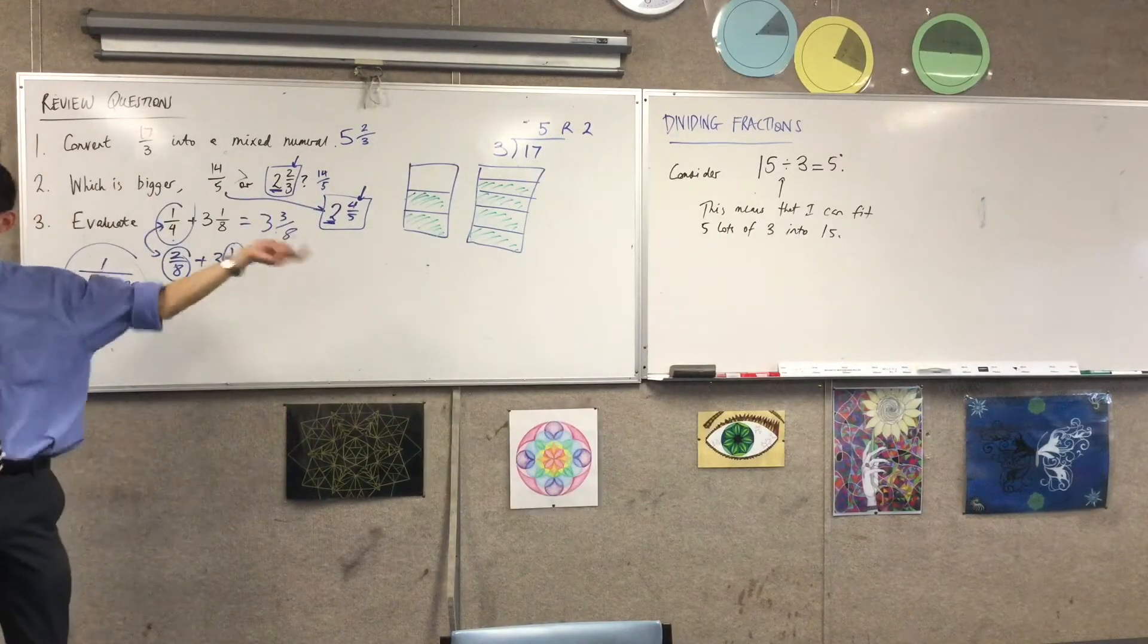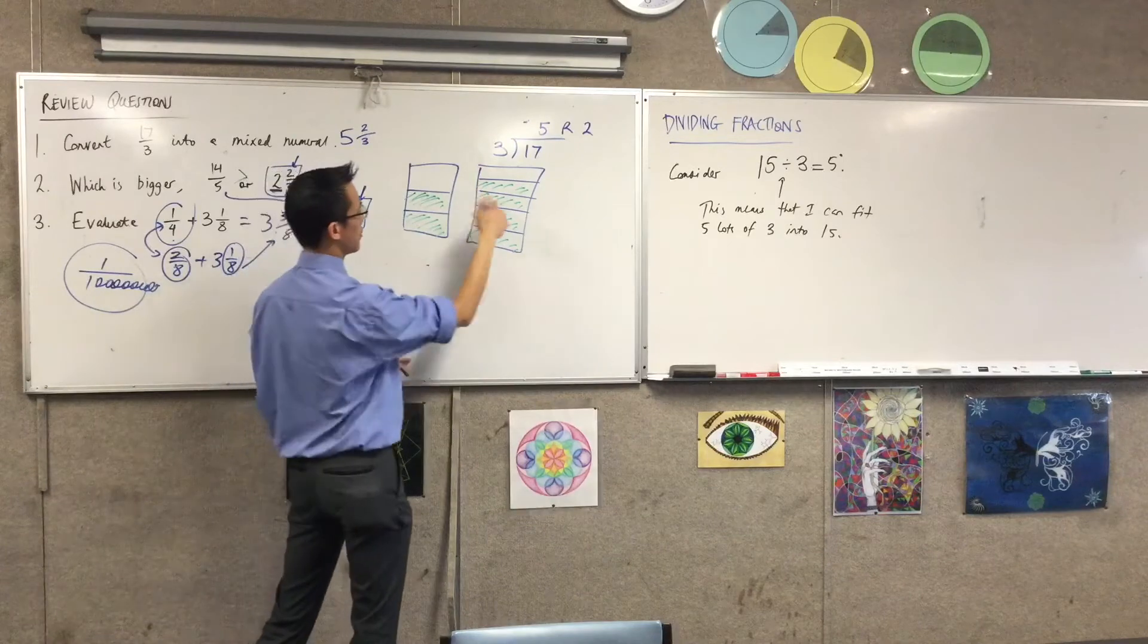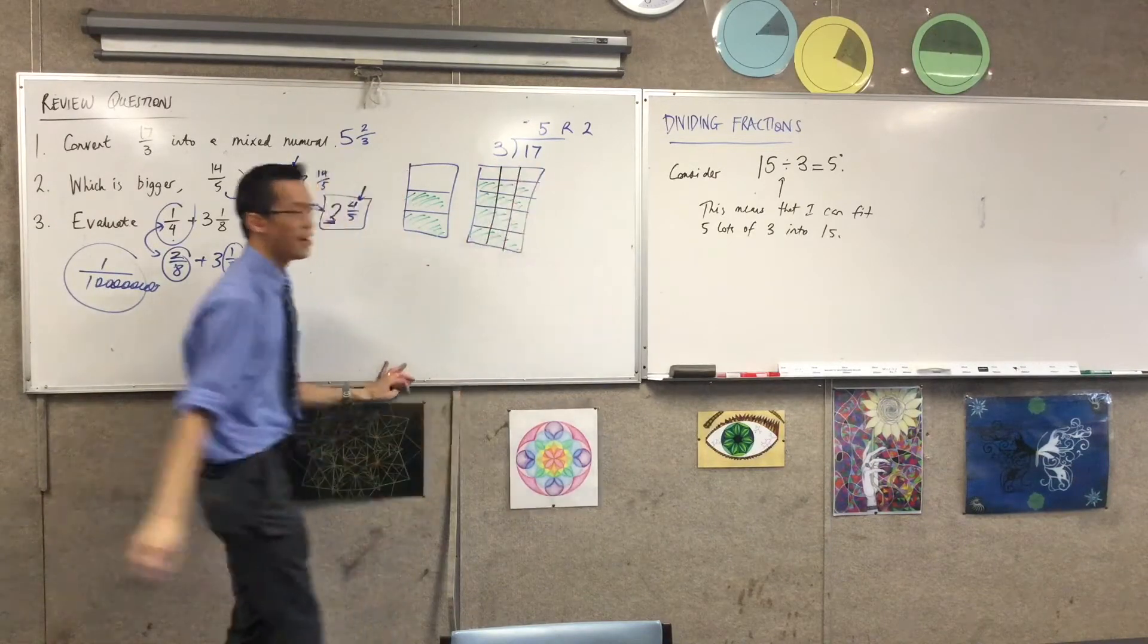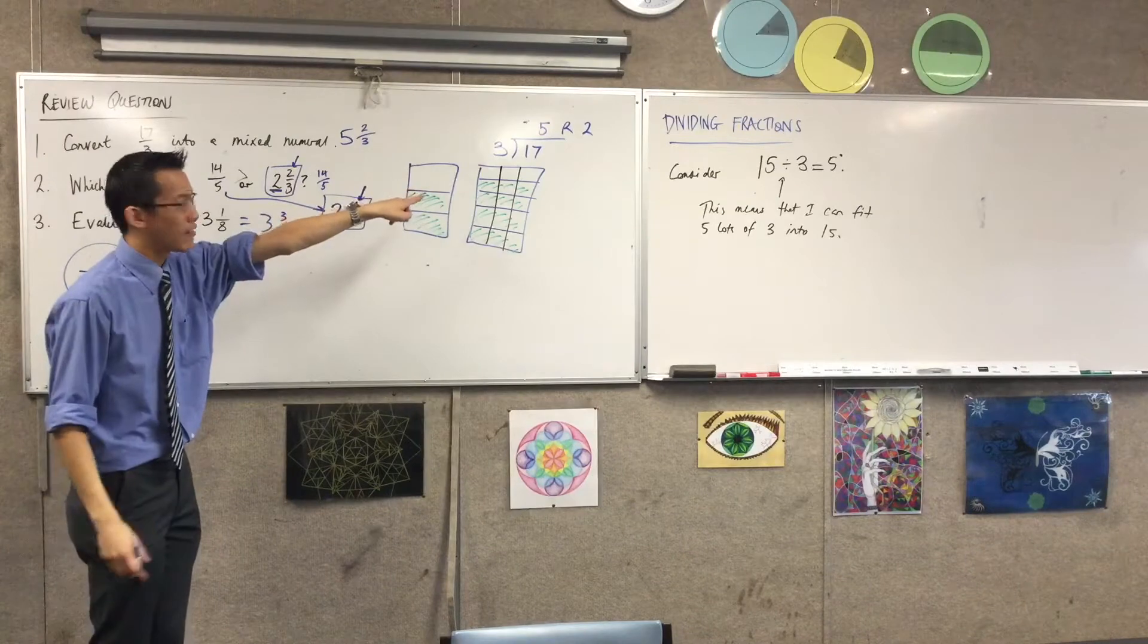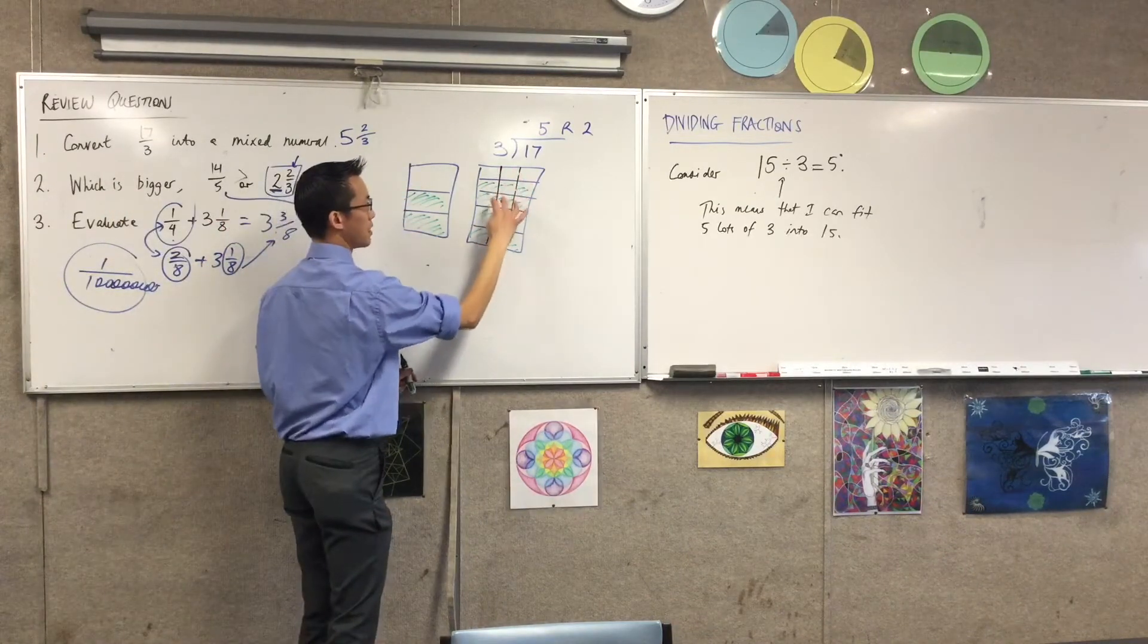So we know how this works. If I had 15 things, this is 5. I'm going to divide. I've got 15 boxes here now. How many times can I break it up into 3? And I can do it 1, 2, 3, 4, 5 times.